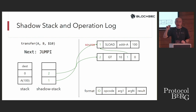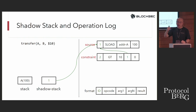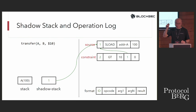After that, we have a JUMPI instruction — a conditional jump that depends on the comparison result of balance A and 10. We mark operation log entry 2 as a constraint: we only execute the following instructions if and only if the comparison result is true; otherwise, the transaction reverts.